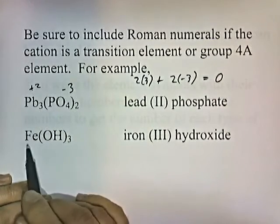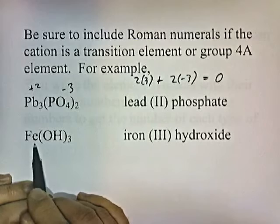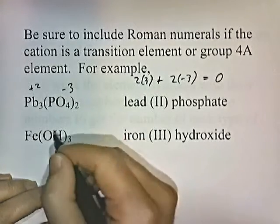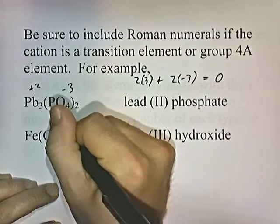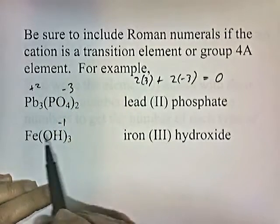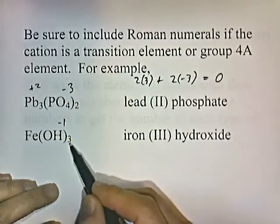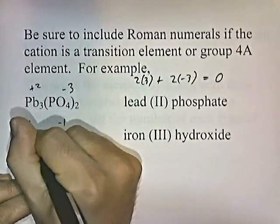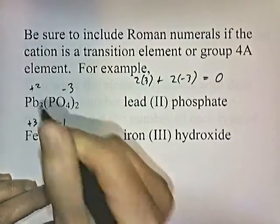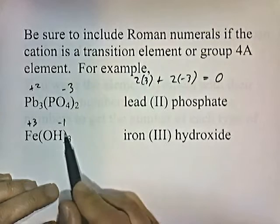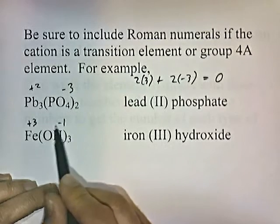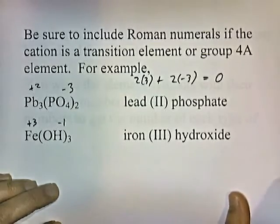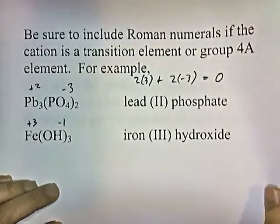Iron hydroxide — iron is a transition element, so we need a Roman numeral. Hydroxide has a negative one charge. There are three hydroxides, giving negative three total, so the iron must have a plus three charge to balance. Therefore, the compound is iron 3 hydroxide.